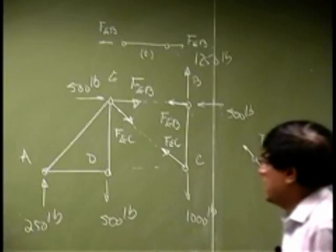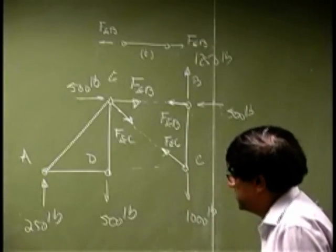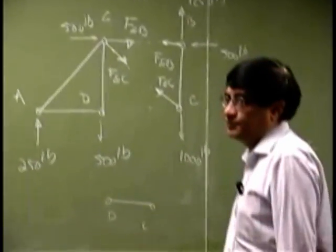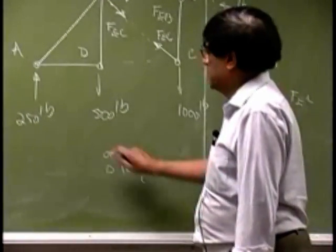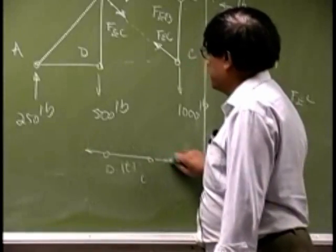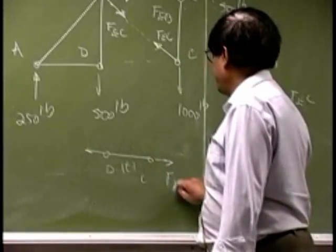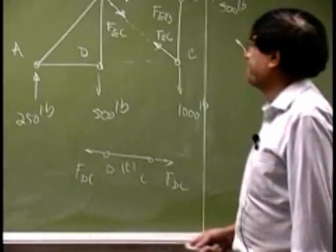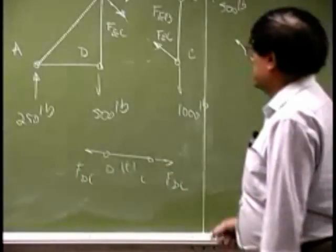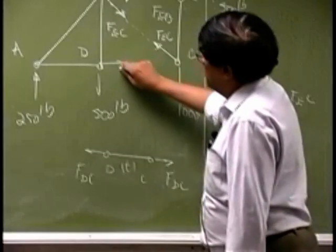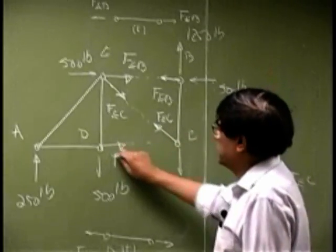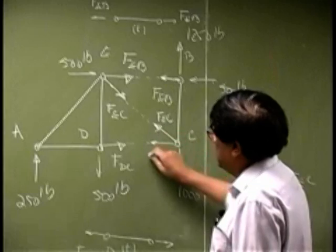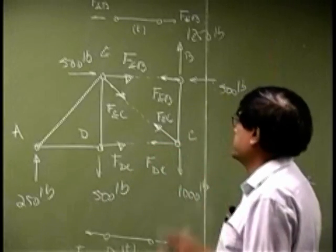Then you still have one more member left, which is DC. So if you put that in tension, you get forces on both ends. That is FDC and FDC. So in here, you will have the force FDC and you will have a force FDC.